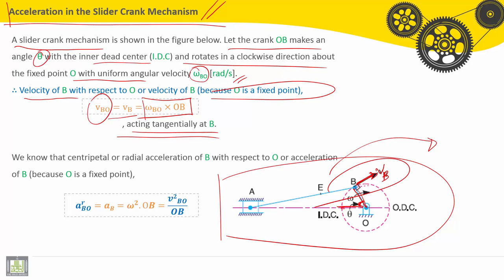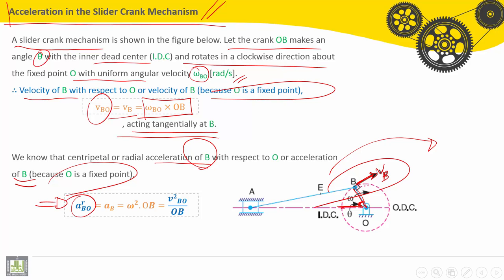We know that the centripetal or radial acceleration of B with respect to O, or acceleration of B (because O is fixed), is equal to aRBO. Radial acceleration equals aB equals omega squared multiplied by the length of the crank OB.